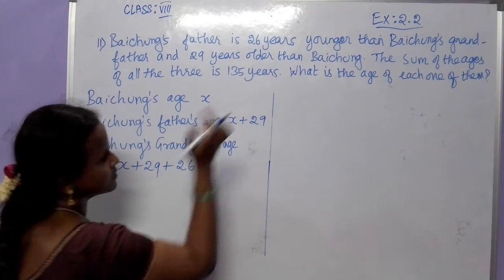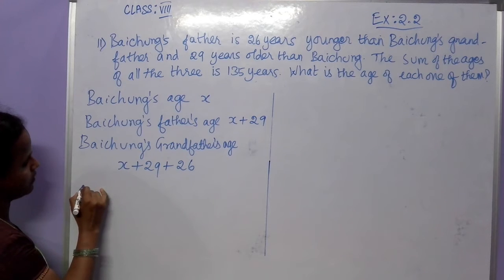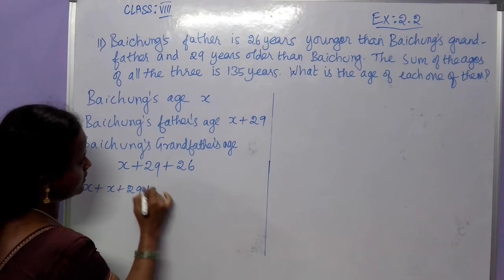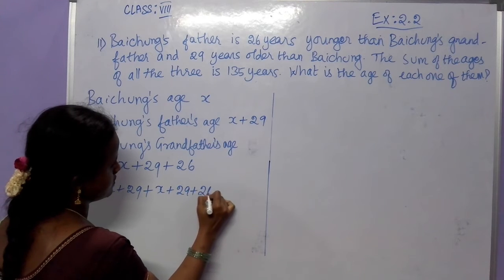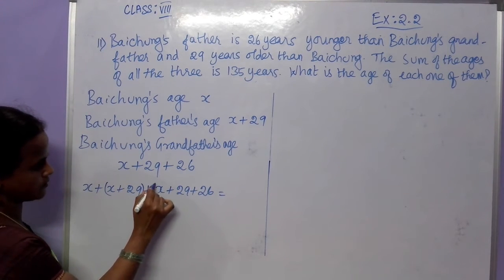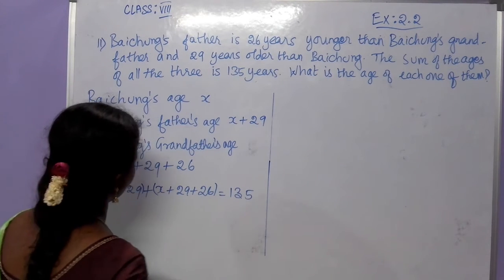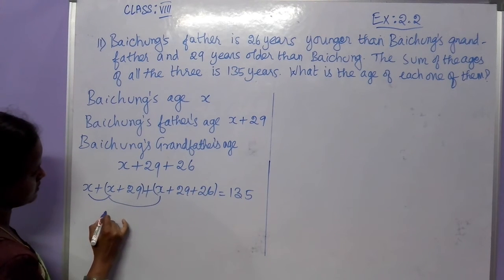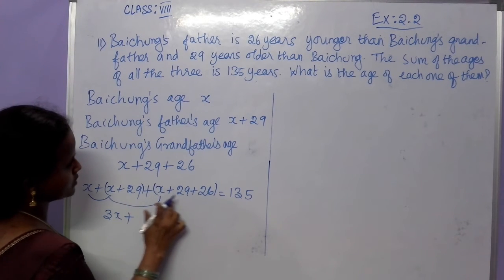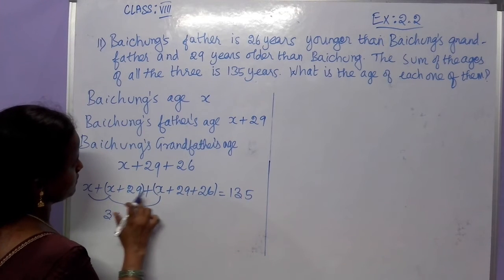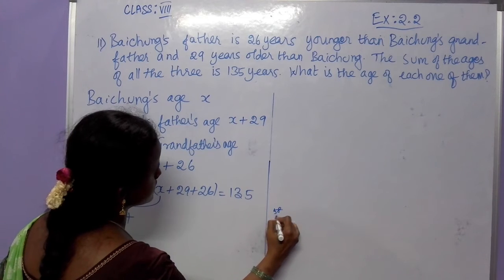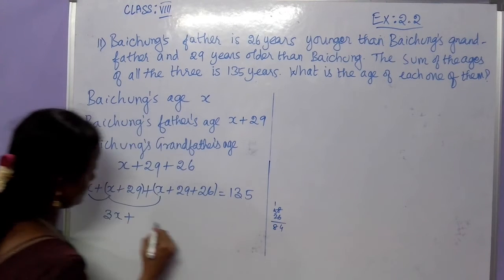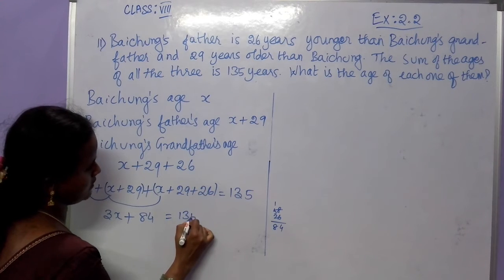The sum of their ages is 135. Now add all: Pacham's age is x, father's age is x plus 29, and grandfather's age is x plus 29 plus 26. Adding all the variables gives 3x. Adding the numbers: 29 plus 29 is 58, and 58 plus 26 is 84. So 3x plus 84 is equal to 135.